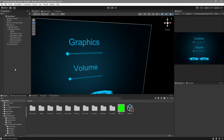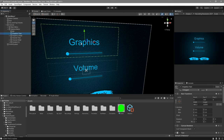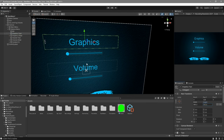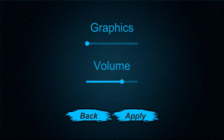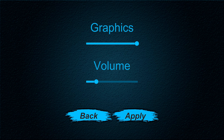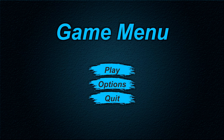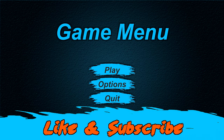Before we test, make sure the graphics label text isn't overlapping the slider bar — if its height covers the slider, you won't be able to drag it. Now in the game, clicking Options shows the menu, and you can see the volume is at 0.7 — the default value we set — rather than zero. If I change the settings, lower the volume, and click Apply, the settings are applied and the volume actually changes. Clicking Back returns us to the main menu. There you go — a fully functional options menu system! If you liked the video, hit like, consider subscribing, and leave a comment. See you in the next one.